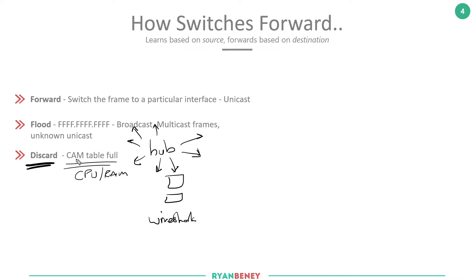Another reason to discard: a rule of switching is that you cannot send traffic back out the interface it was received on. If the destination MAC is YY but the CAM table says YY is reachable out of the same interface the traffic arrived on, the switch has no option but to discard that traffic.